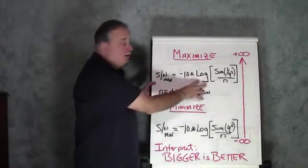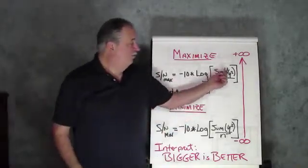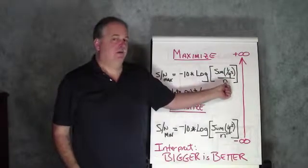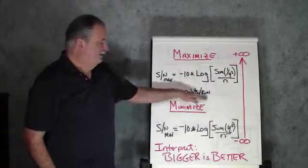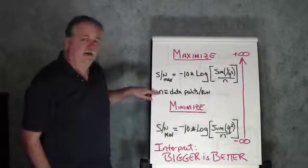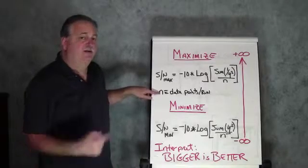what we do is minus 10 times the log of the sum of 1 over y squared, divided by the total number of data points per experimental run. So, this metric, once again, is for each experimental condition, and n here is how many data points do you have in an experimental run.